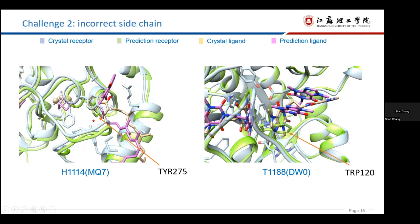For example, the ligand of MQ7 in H1114 and DW0 in T1188. For T1188, even if the predicted pose of DW0 is correct, the RMSD value is still larger than 5 angstrom. You can see the side chain of this residue and the side chain of this residue.